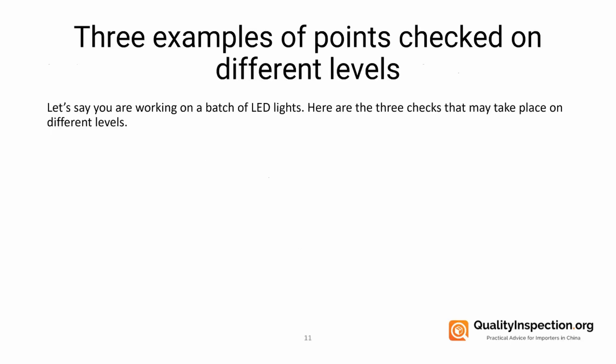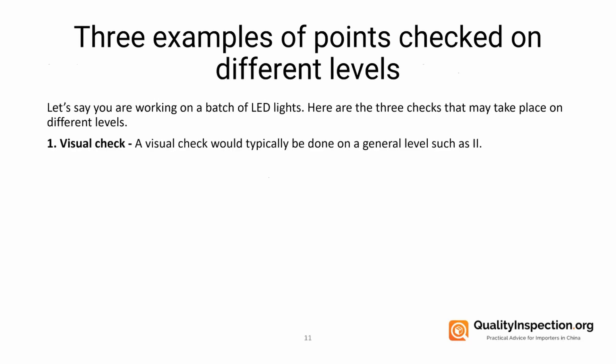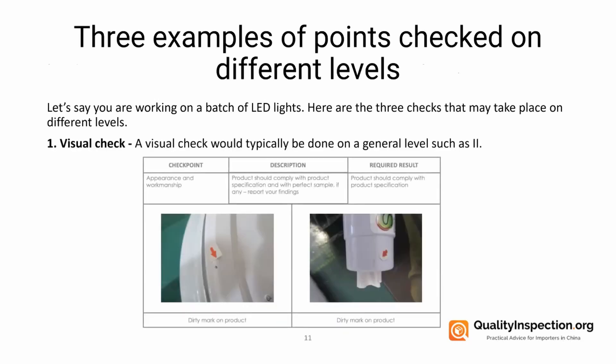Let's look at three examples of points checked on different levels, using a batch of LED lights. Firstly, a visual check — this is typically done on a general level such as level 2. We check the appearance and workmanship; the product should comply with product specifications, and we report the findings and mark where there may be issues.